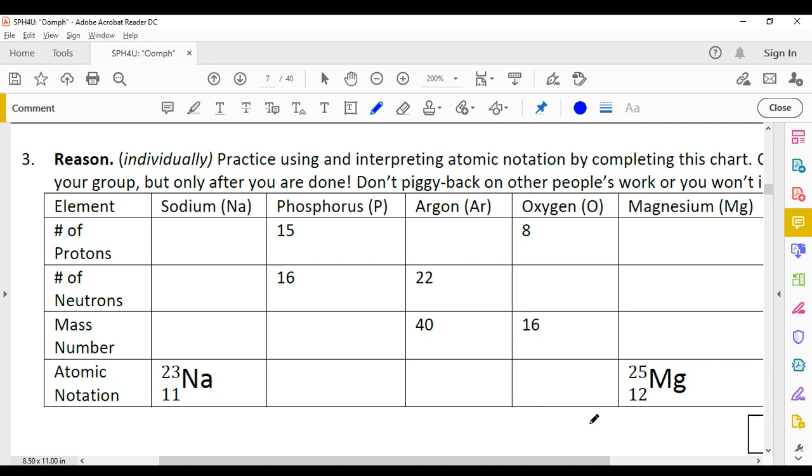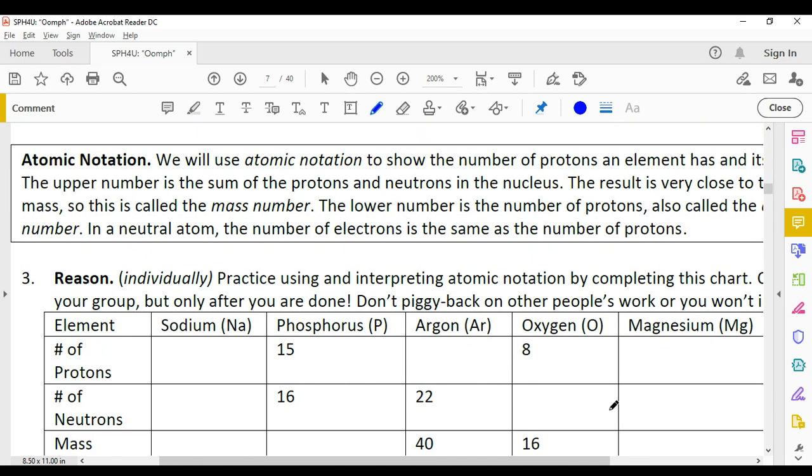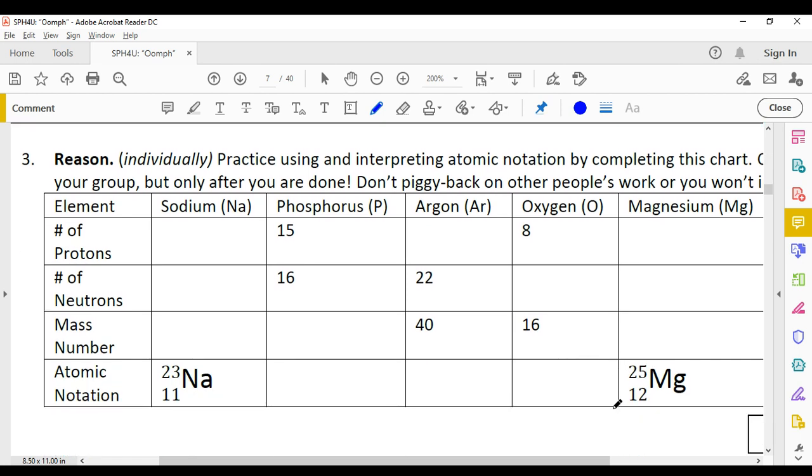Let's take a look at how we write down atomic notation. Atomic notation is a handy way of showing the parts that make up a particular atom or element.